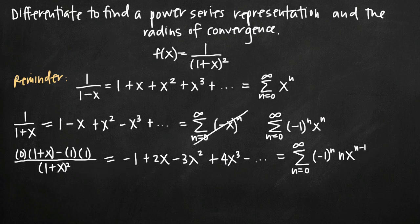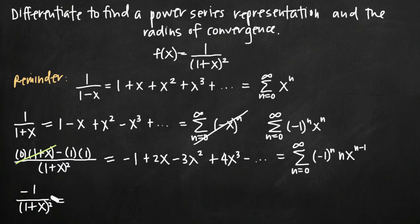Now simplifying: 0 times 1 plus x goes away completely, leaving negative 1 in the numerator divided by 1 plus x squared, equal to the series terms and the infinite sum. Notice the left-hand side matches our original function except for this negative sign out in front — this piece is multiplied by negative 1 where our original function is not. So all we have to do is multiply through the entire well-known power series by negative 1.